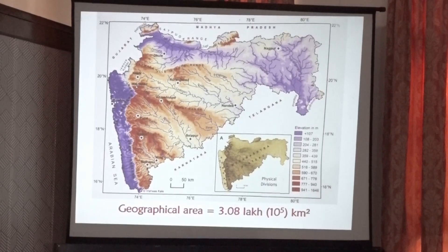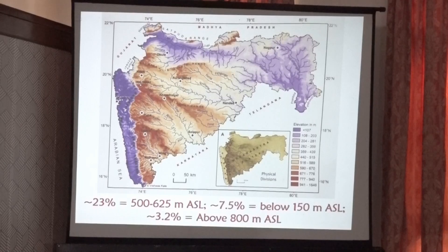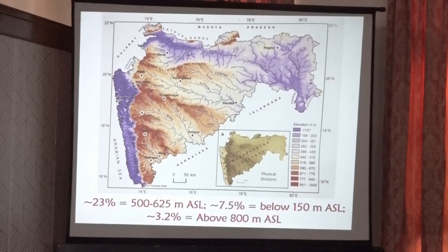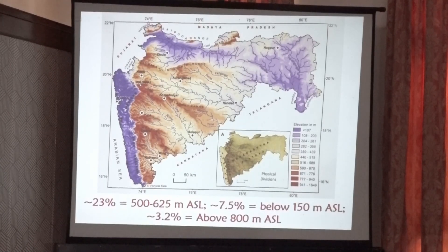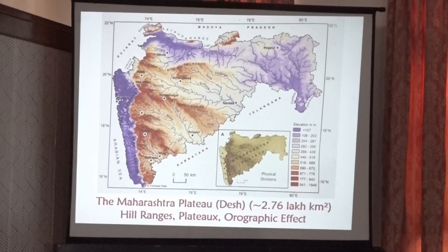If we talk about the geographical area of Maharashtra, it is 3.08 lakh square kilometers, and about 23% of this landscape is between 500 and 625 meters ASL. 7.5% of the land is below 150 meters — mainly the lower part of the Tapi basin and the Konkan lowland — and only 3.2% of the area is above 800 meters mean sea level.